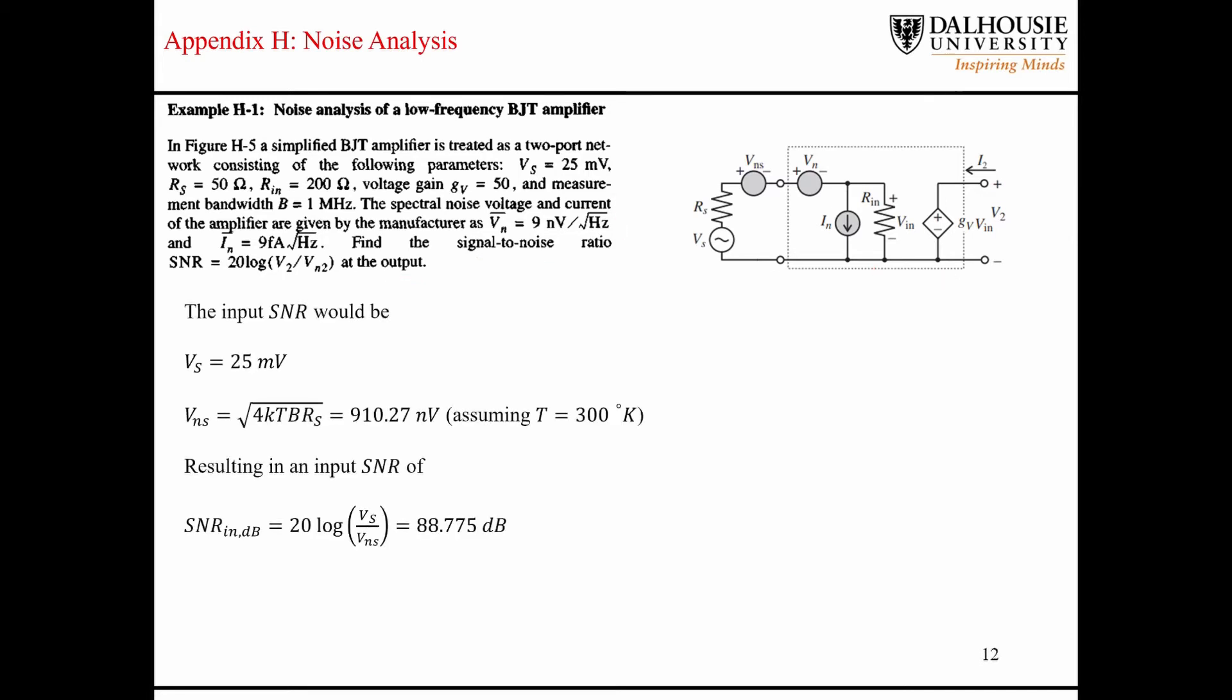So to that end, the first thing we want to do is figure out the input SNR. So we know that the signal to noise ratio is going to be the signal, 25 millivolts, divided by the thermal noise due to this 50 ohm resistor here, RS. And when you plug in all the numbers, assuming that we're at room temperature here, we end up with an input signal to noise ratio of 88.775 dB.